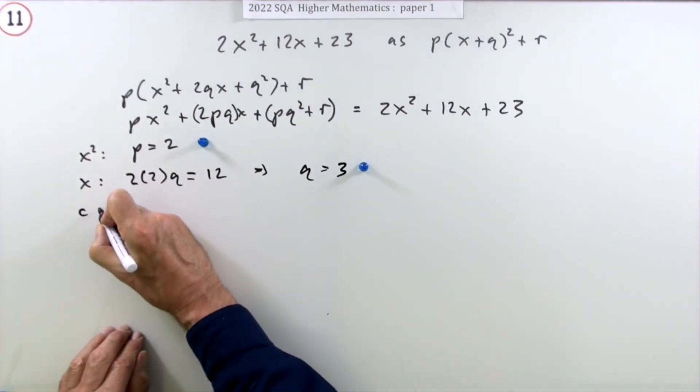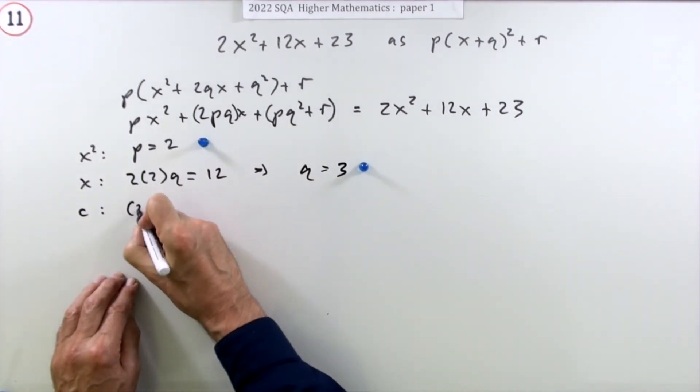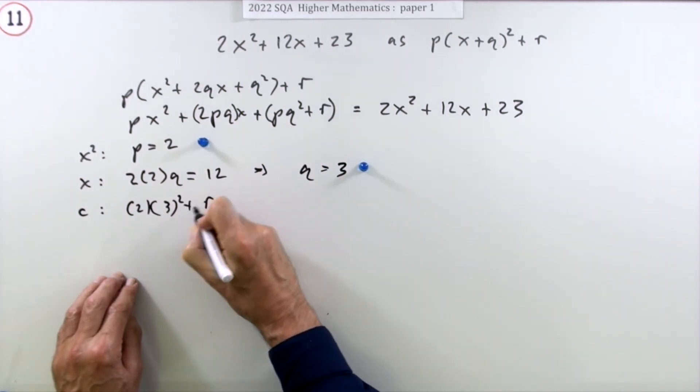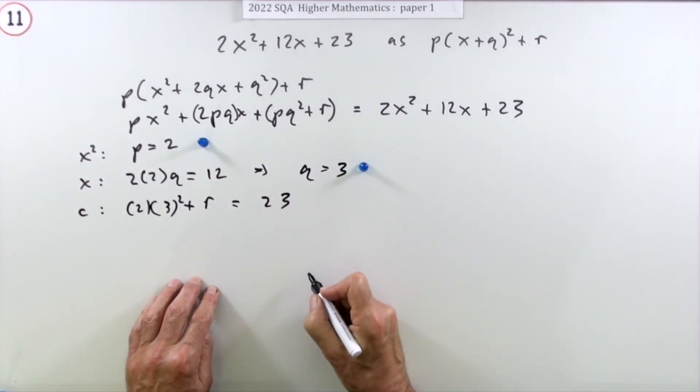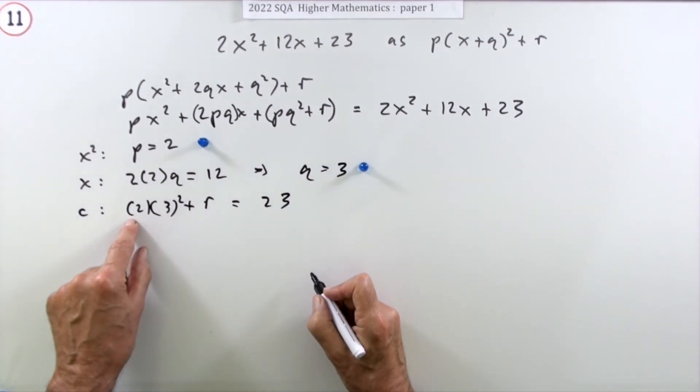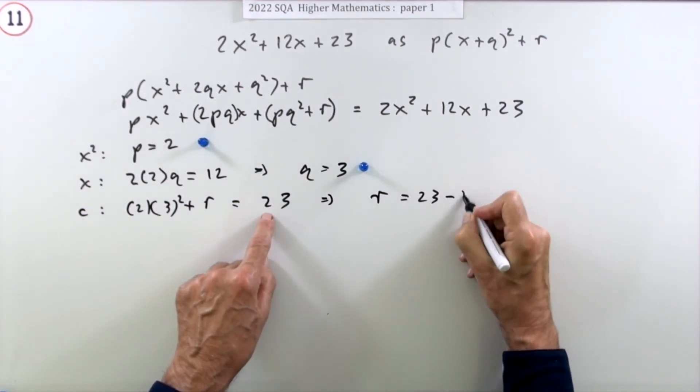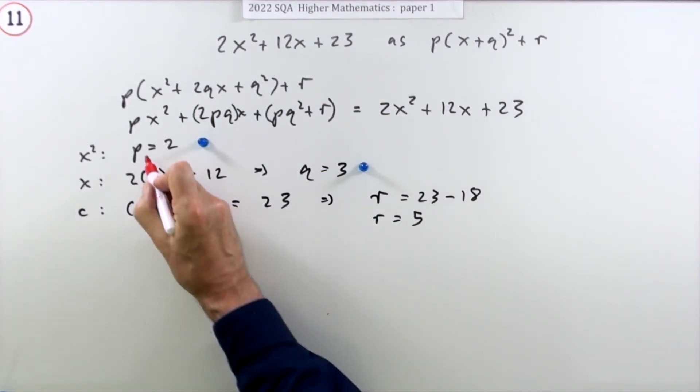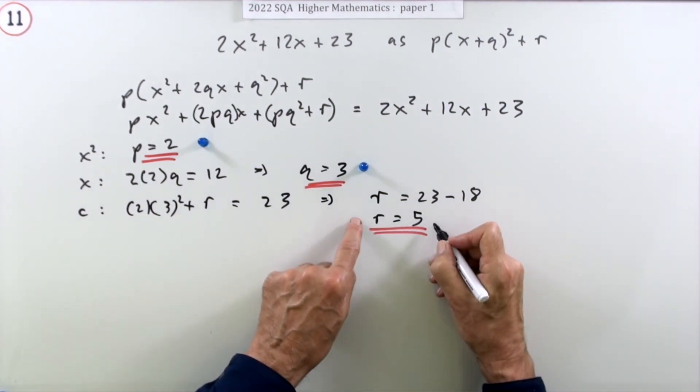Now the constant term: pq² + r, where p is 2 and q is 3. So that's 2×3² + r should be the constant term 23. That's 2×9 = 18, so that means r must be 23 - 18, so r must be 5.